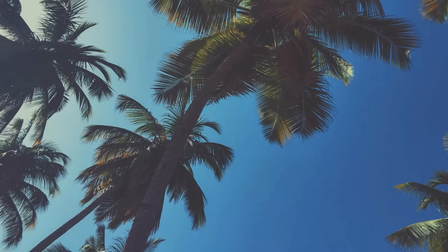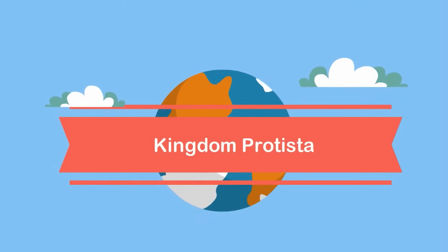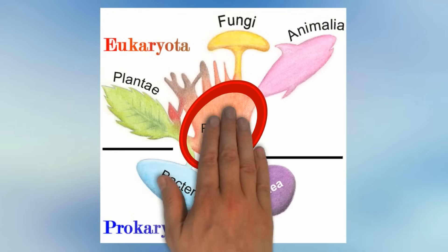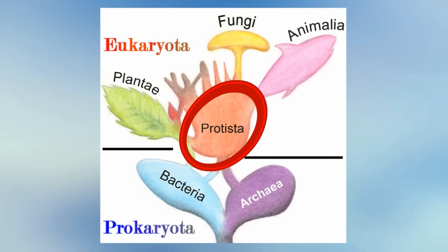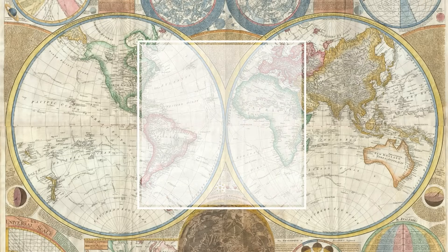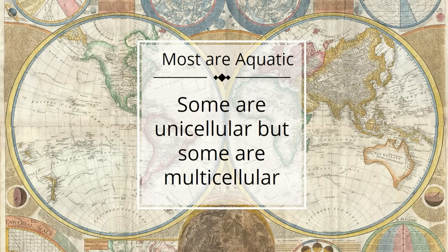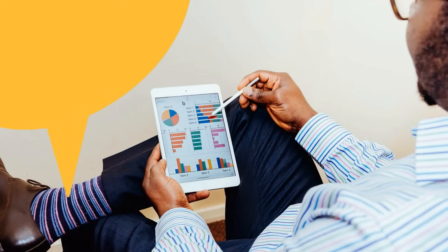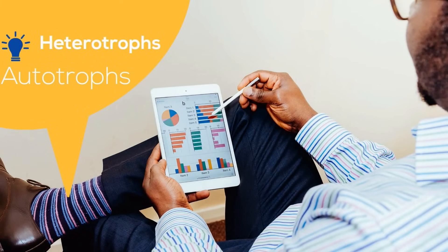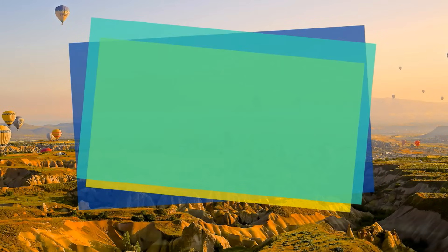Here is a quick look at the Kingdom Protista, one of the five major kingdoms. This kingdom is kind of the junk drawer kingdom, because many of the organisms in it just don't fit anywhere else. Most are aquatic, but not all. Some are unicellular, but many are also multicellular. They are all eukaryotic, but some can reproduce sexually and others asexually. Some are heterotrophs, others are autotrophs, some are decomposers, and others are parasites.